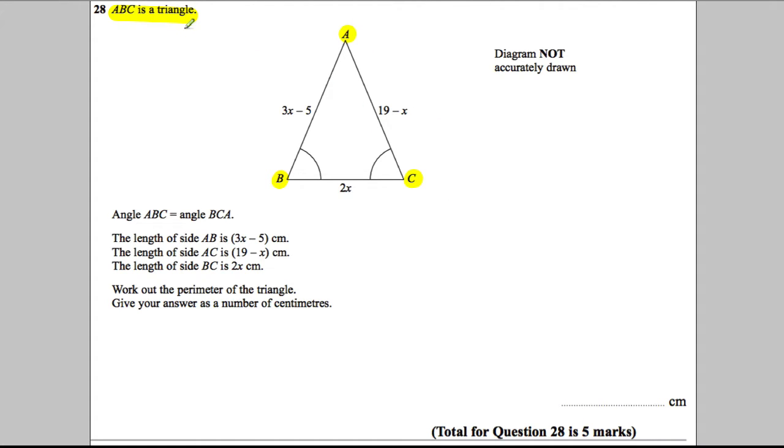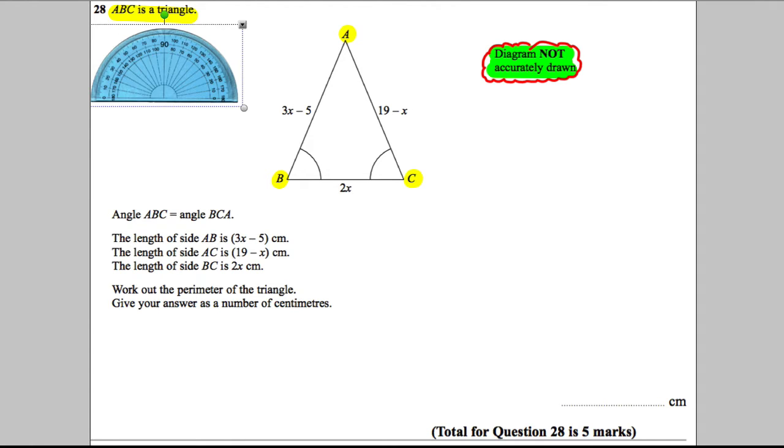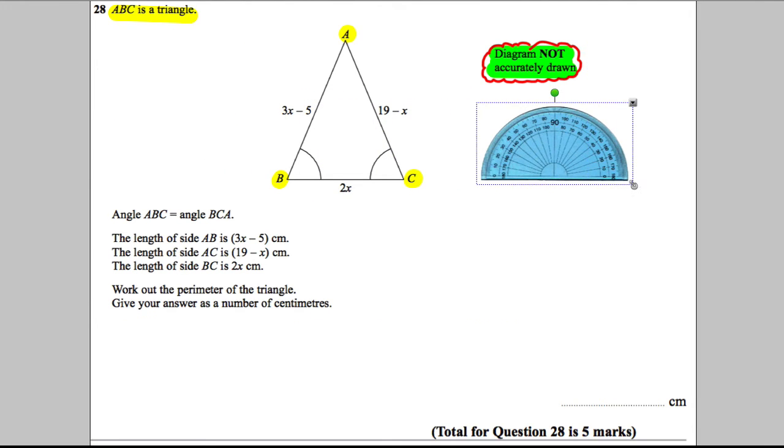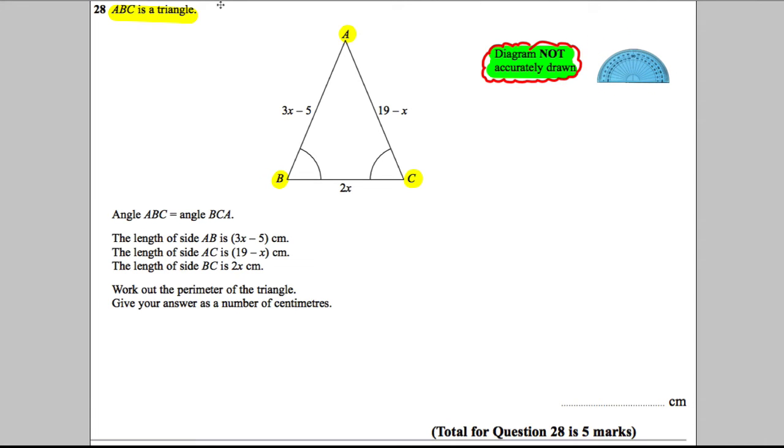Now, the key thing on this page that I think students forget about a lot of the time, the diagram is not drawn accurately. That is one of the most important things that students forget to read. When it says that, it means you cannot get your protractor out and start measuring. Your protractor is absolutely forbidden when you see that sign or your ruler. Forbidden.